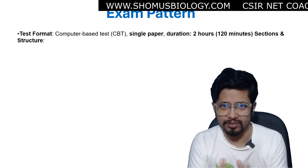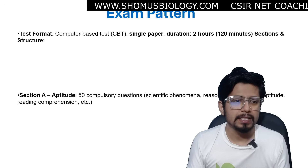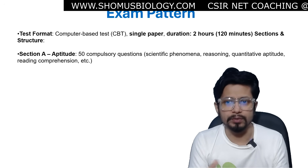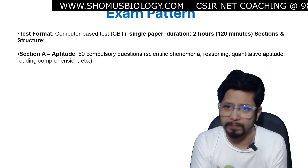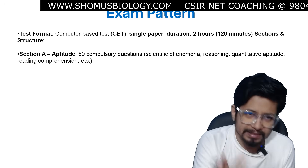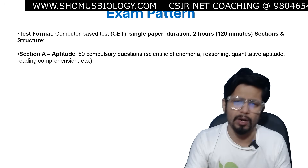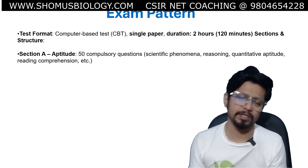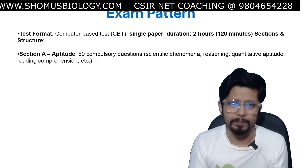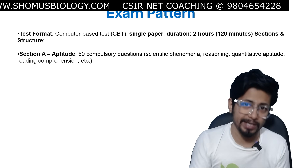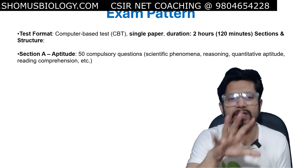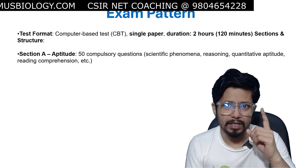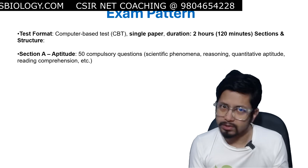There are 3 sections and a specific structure to the examination. Section A consists of aptitude — numerical aptitude, reasoning, quantitative aptitude, and reading comprehension. This aptitude section is becoming very common in all competitive examinations in India, similar to Part A in CSIR NET life science. In the ICMR BRIT examination, Section A has 50 compulsory questions, each worth one mark, totalling 50 marks.